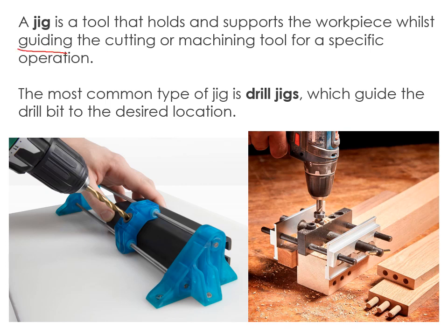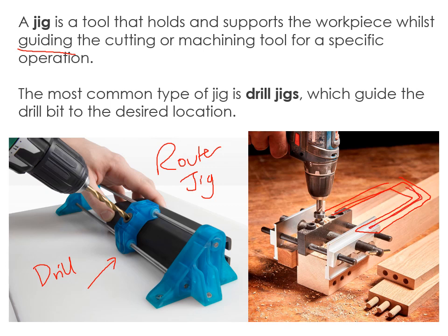A jig is a tool that specifically holds the workpiece and — importantly — guides the cutting or machining tool for a specific operation. Common examples include drilling jigs and router jigs. A router moves around in different patterns, for example to cut shapes from a piece of wood. There is a small hole in the jig through which the drill is guided into the workpiece to drill a hole in a specific place. Jigs can also include depth stops.